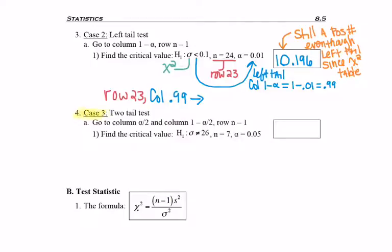Lastly, we have case 3. What if we have a two-tailed hypothesis test? Then don't forget that we're going to get two answers, so we'll be going to two different columns, and degrees of freedom will stay the same.